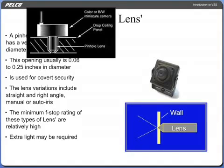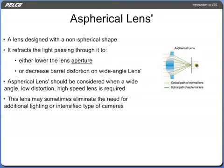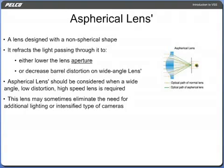An extra light may be required in order for the camera and lens assembly to produce a quality picture. An aspherical lens is a lens designed with a non-spherical shape. It refracts the light passing through it to lower the lens aperture, increasing the light passing through it. With a wide-angle lens, it decreases barrel distortion. Aspherical lenses should be considered when a wide-angle, low-distortion, high-speed lens is required. This lens, in combination with low-light sensitive cameras, may sometimes eliminate the need for additional lighting or intensified type cameras.